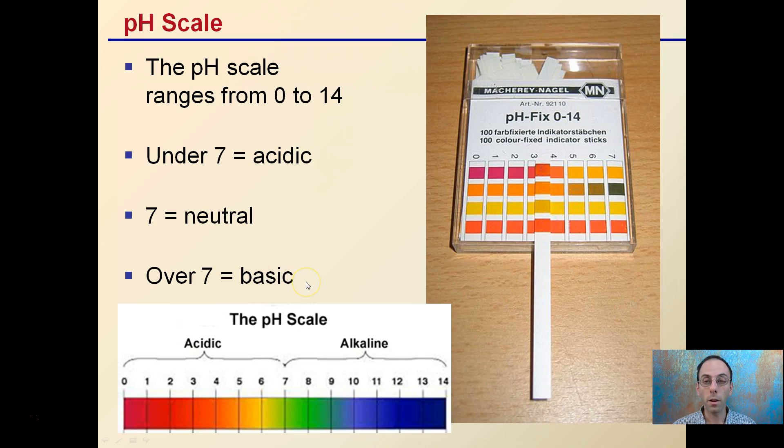Now, the scale of pH, it's measured from 0 to 14. If you're under 7, that range of pHs is considered acidic, 7 is considered neutral, and above 7 is the basic range, or alkaline.